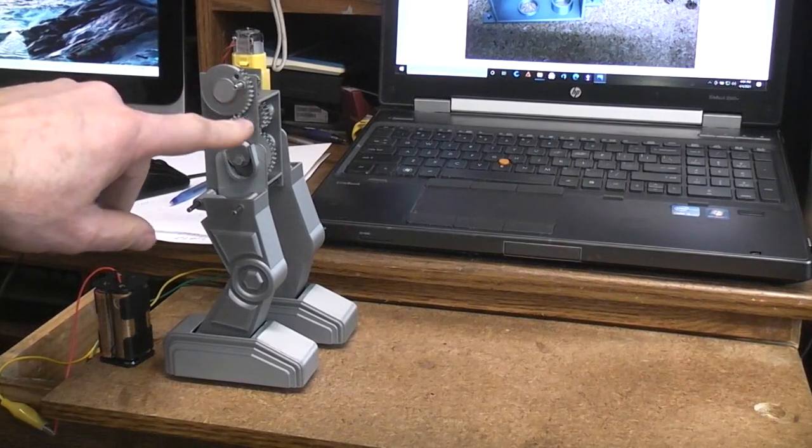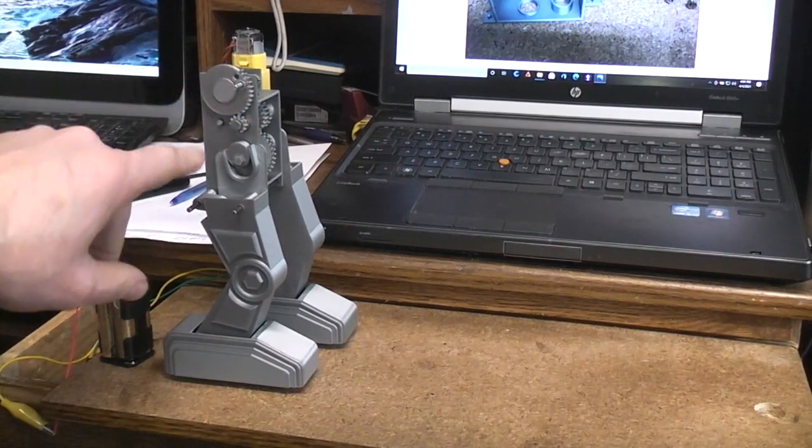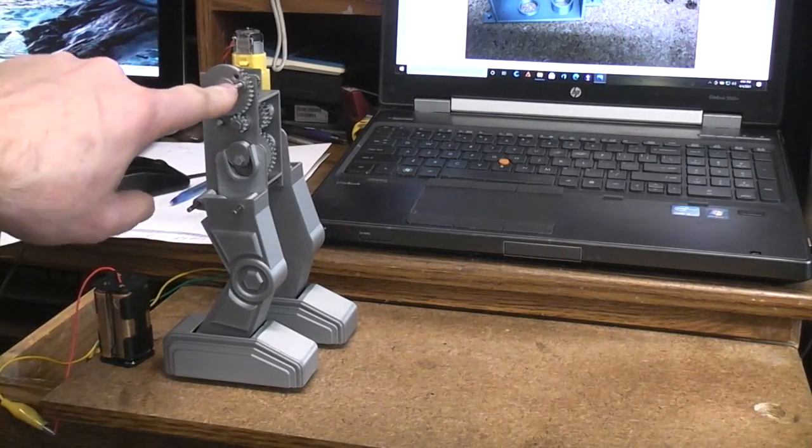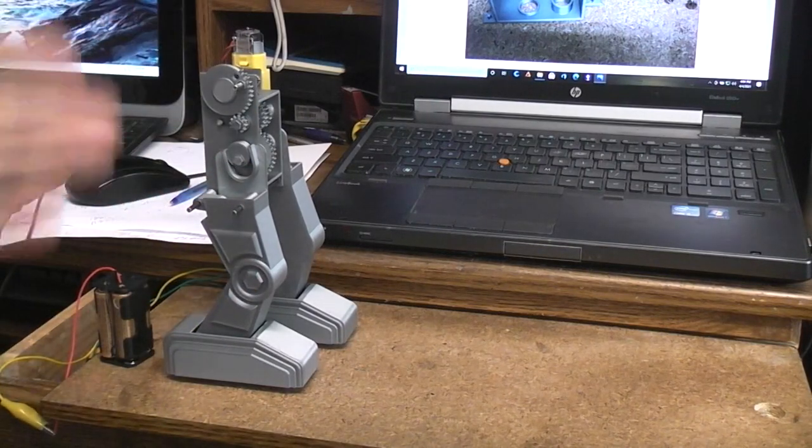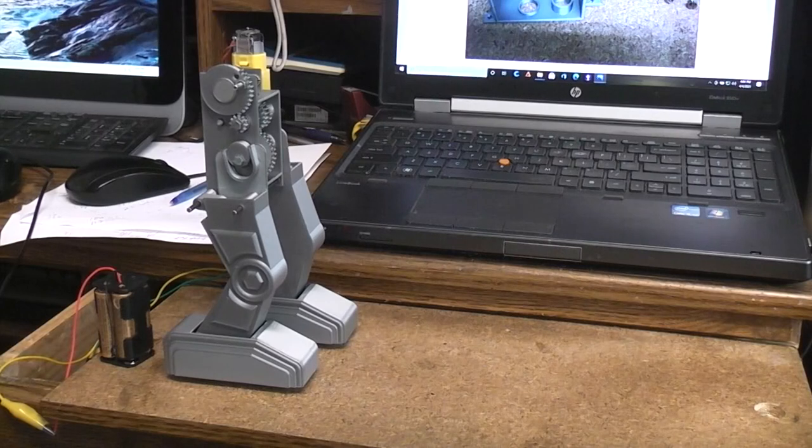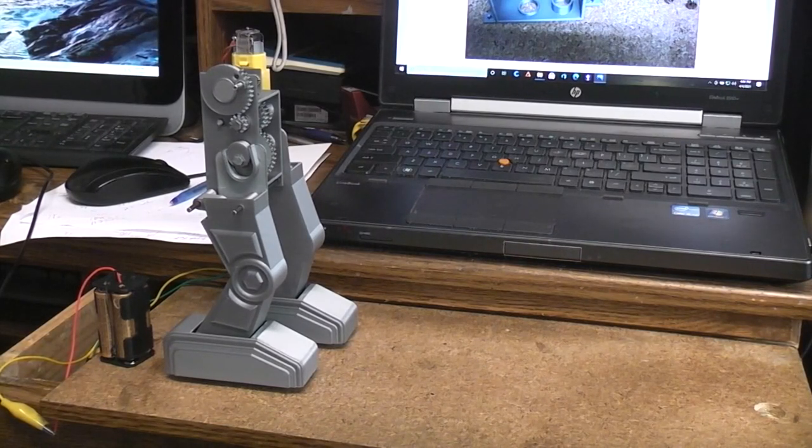So right now I just have a simple gear cam mechanism here. So when it's not walking, this gear cam will raise. So maybe I want to have it open a door or open the head or push guns out. Something. Haven't decided what yet.